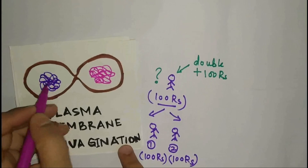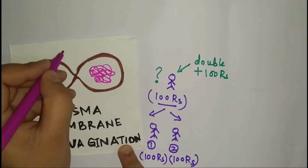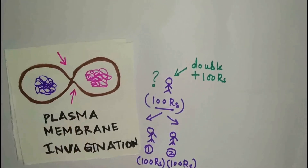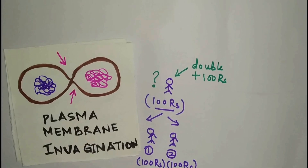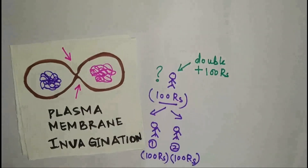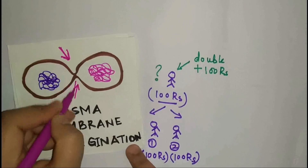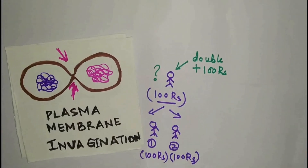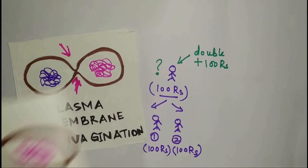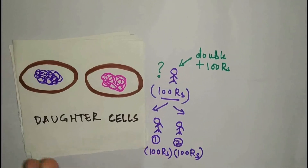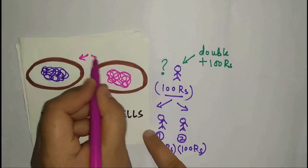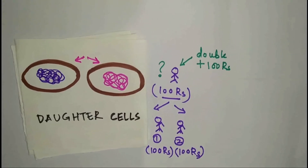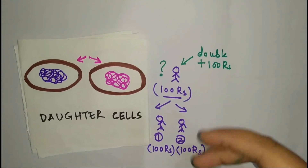As the chromosomes have already separated, the cell membrane — also called the plasma membrane — starts to come closer and invaginates inward. This next step is called plasma membrane invagination. The plasma membrane continues to invaginate and then pinches off, and at the end what we get are two beautiful daughter cells.